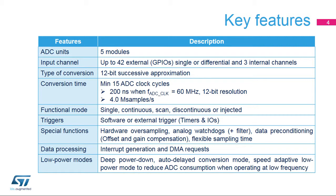There are several functional modes and several different triggering methods. In order to offload the CPU, the ADC has an analog watchdog for monitoring thresholds, with new filtering features. The ADC also offers oversampling to extend the number of bits in the final conversion value, new flexible sampling time control, and offset compensation. For power sensitive applications, the ADC offers a number of low power features.